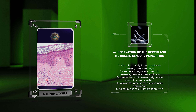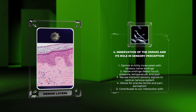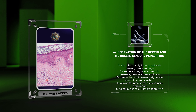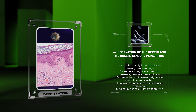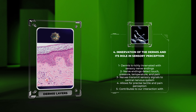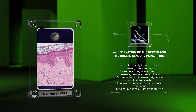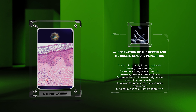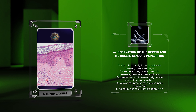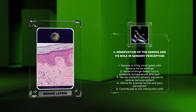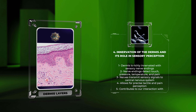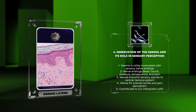Nerves in the dermis transmit these sensory signals to the central nervous system, contributing to our ability to perceive and react to the external environment. The rich innervation of the dermis allows for precise tactile and pain perception, enabling us to interact with our surroundings effectively.